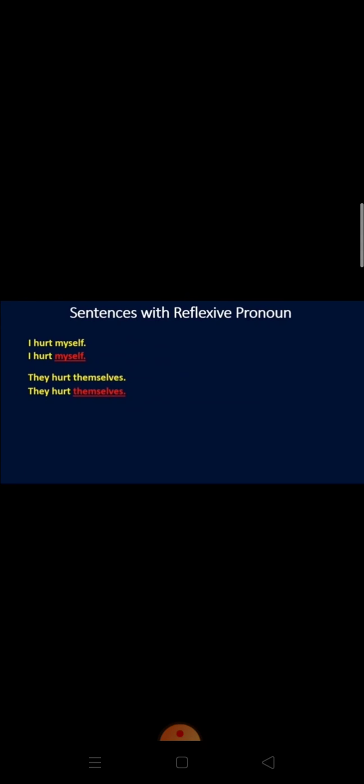For making reflexive pronouns, we add two words: 'self' and 'selves'. Being singular, 'self' is added to my, your, him and her. And 'selves' is added to the plural pronouns — that is, our, them, your. Now we will see some examples of reflexive pronoun.